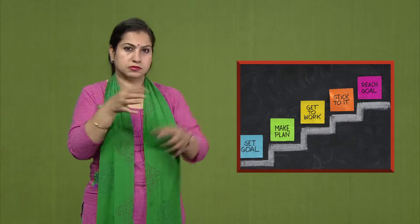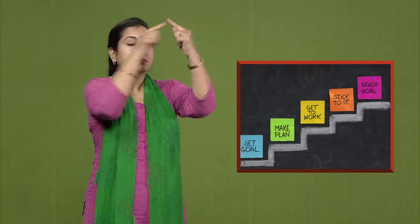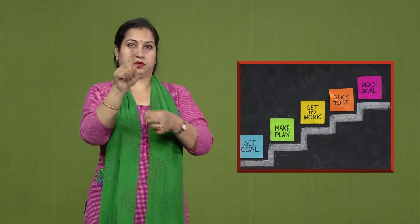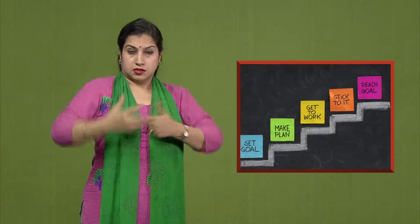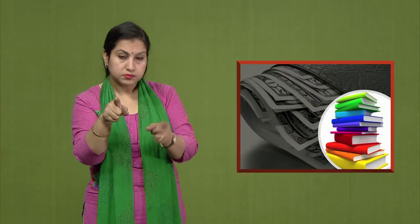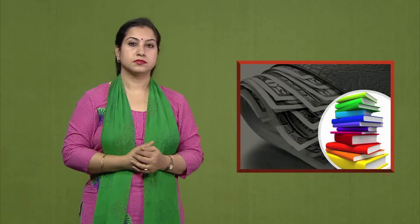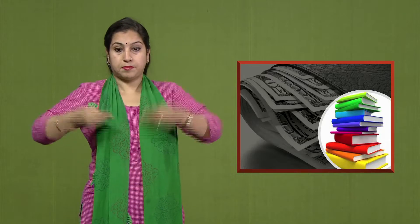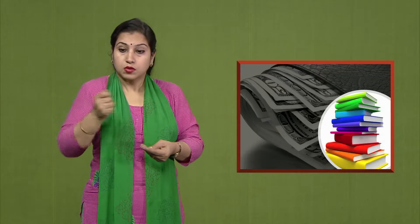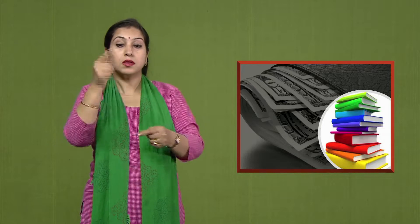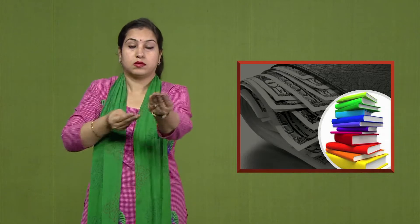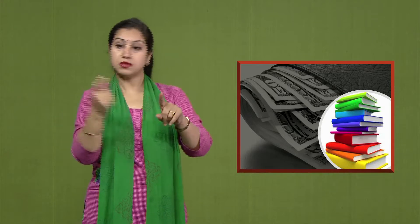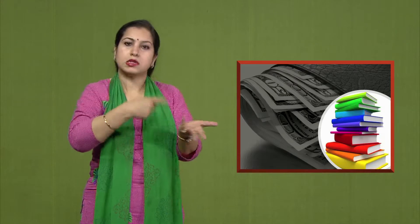Now, let us understand what we need to achieve our goals. For achieving good marks, you need books. For getting books, you need to go to market to purchase them. What do you need to give to the shopkeeper in exchange for books? Money. Therefore, books and money are your resources.